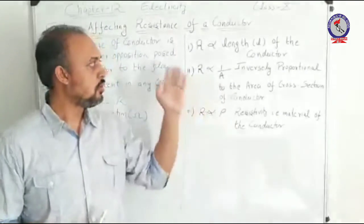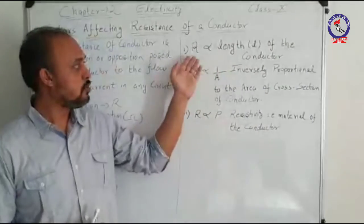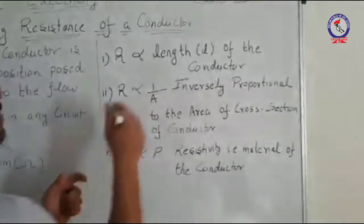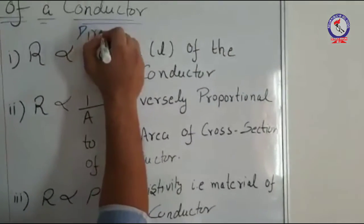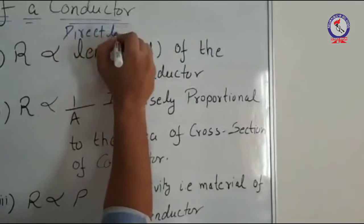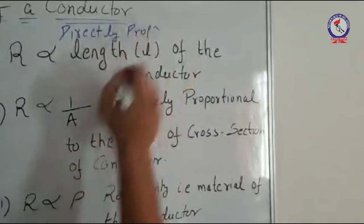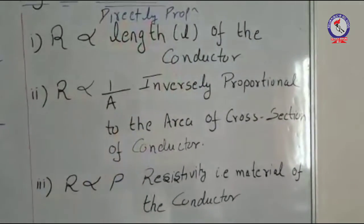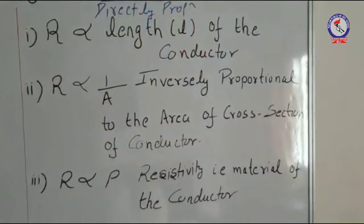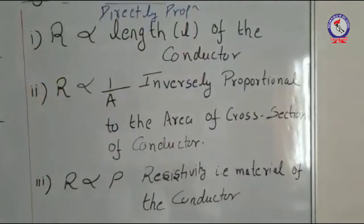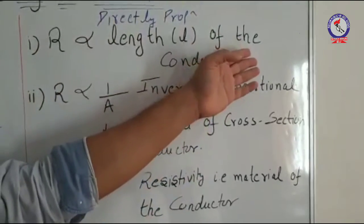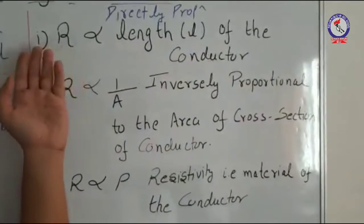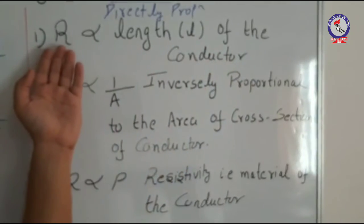Now we will move on towards the factors which contribute to the changing of resistance. The very first factor is that resistance is directly proportional to the length of any conductor. Directly proportional means on increasing the length of the conductor the resistance increases, while on decreasing the length of the conductor the resistance also decreases. This is the first factor on which the resistance of a conductor depends.